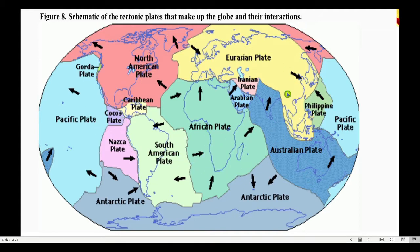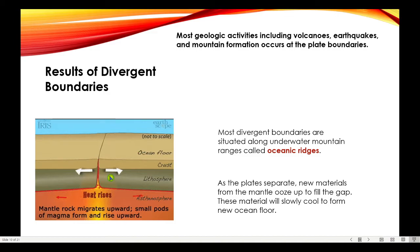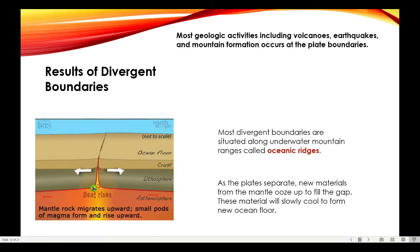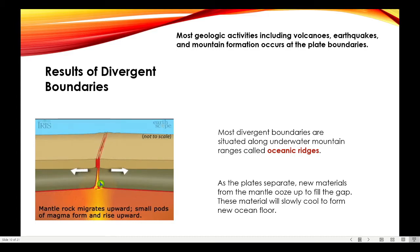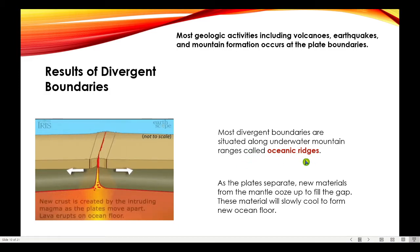The interaction of plates creates different geologic landforms or features and creates an impact not only on our environment, but also on us. Along divergent plate boundaries, the two plates are moving apart, creating a gap between them. This allows the magma from the mantle to ooze up and fill in the gaps. This magma slowly cools to form the new oceanic floor. Most divergent plate boundaries are situated along underwater mountain ranges known as oceanic ridges.